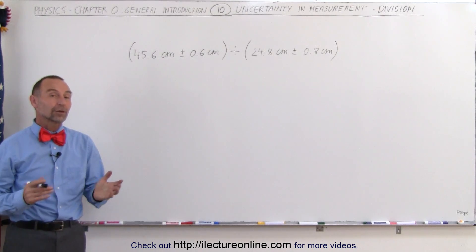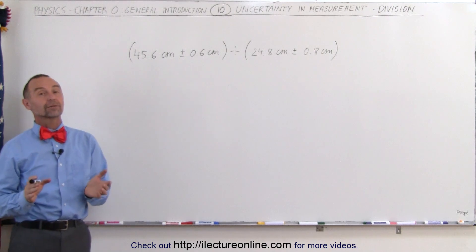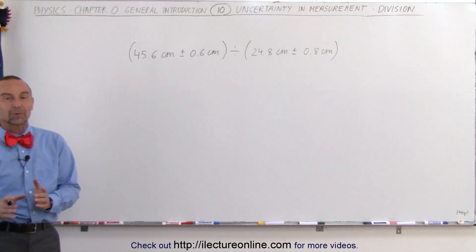Welcome to ElectronLine. Now we're going to take a look at when we divide numbers with uncertainties, what we must do. And it turns out the rule is exactly the same as with multiplication.